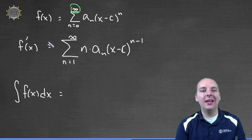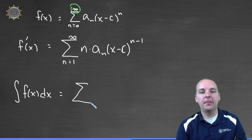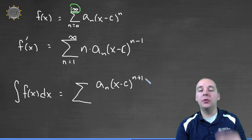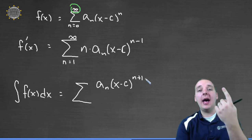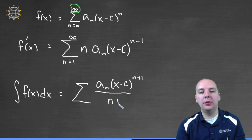Now how about the integral, how could you take the integral of something like this? Well, you basically do the reverse. You would have a sum, a sub n, x minus c to the n plus one. You remember for the power rule you add one to the exponent, divided by n plus one.